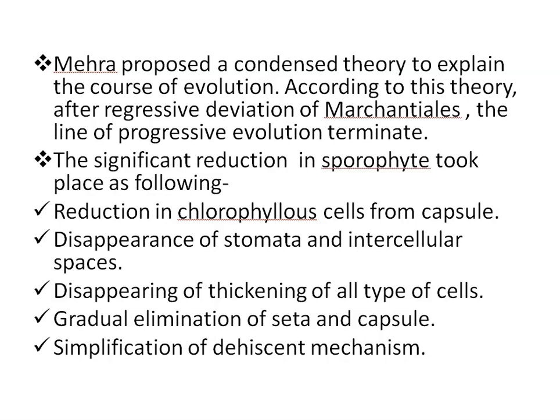Mehra proposed a condensed theory to explain the course of evolution. According to this theory, after regressive evolution of Marchantiales, the line of progressive evolution terminates. The significant reductions in the sporophyte that took place are: reduction in chlorophyllous cells from the capsule, disappearance of stomata and intercellular spaces, disappearance of thickening of all types of cells, gradual elimination of seta and capsule, and simplification of the dehiscence mechanism.